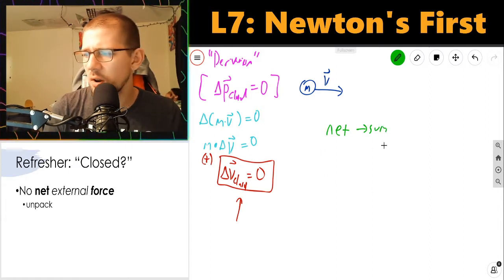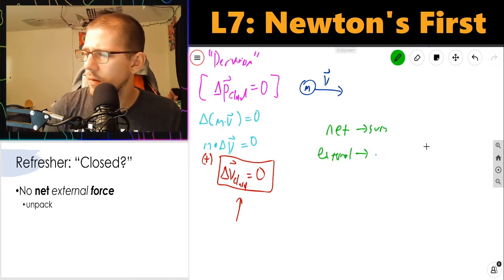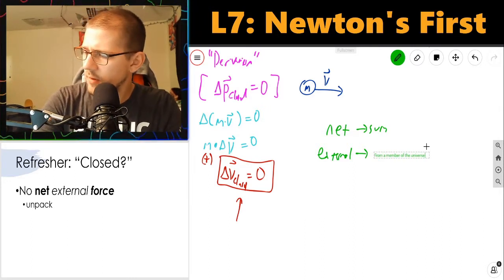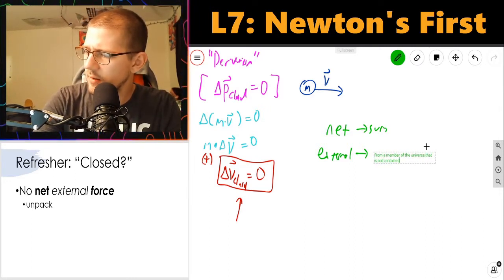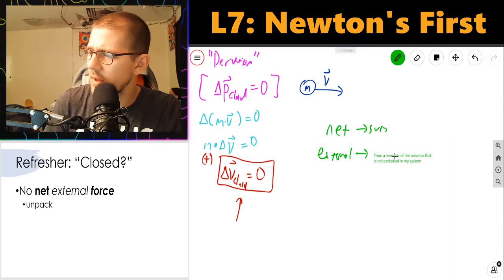External means acting from outside the system. External means from a member of the universe that is not contained in my system. You kind of just define a system, and then there's a universe outside it.